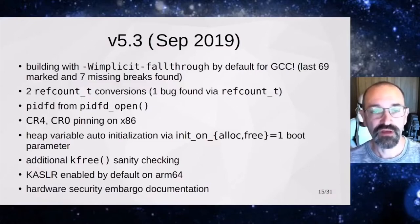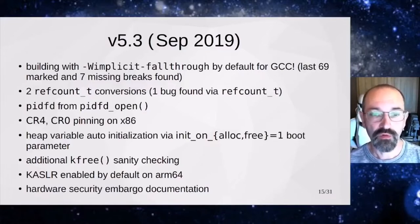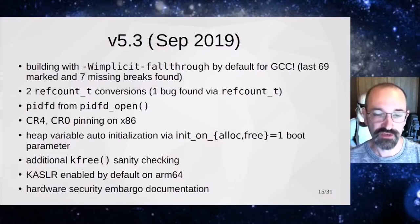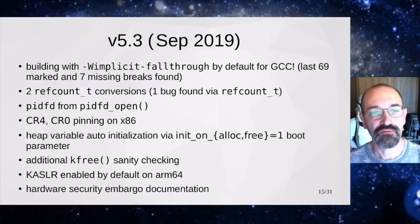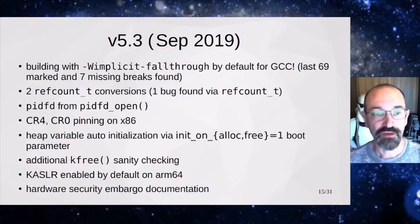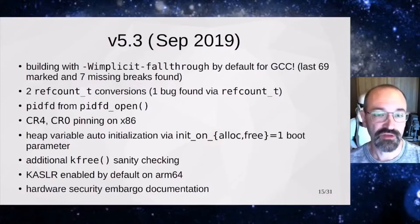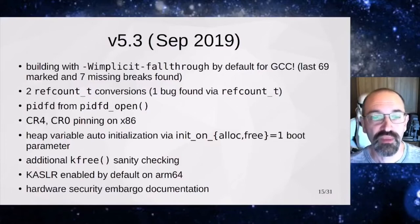In 5.3 we also saw ref count conversions so we wouldn't have ref counters wrap around to zero, and more PIDFD work so we don't have process descriptors recycling. On x86, we gained pinning of the CR4 and CR0 values, which control CPU features like SMEP, SMAP, and WP, making sure those wouldn't get flipped unexpectedly — that's been a common exploit technique. We also gained heap variable auto-initialization: if you boot with init_on_alloc=1, all heap allocations will be zeroed automatically, eliminating a whole class of uninitialized heap vulnerabilities. Additionally we got more allocator sanity checks, KASLR enabled by default on ARM64, and documentation for handling hardware security flaws like Meltdown.